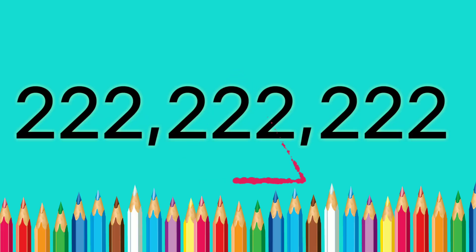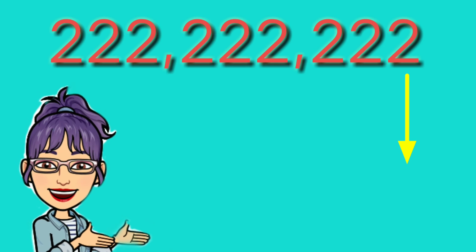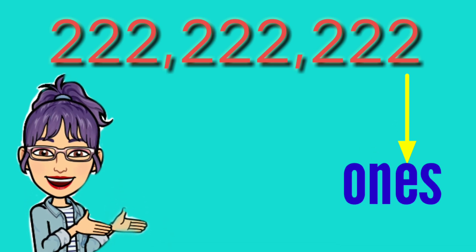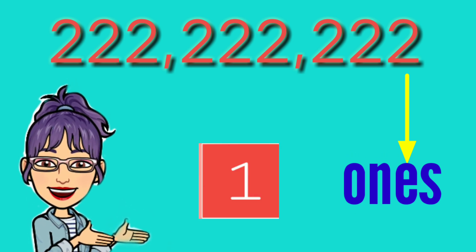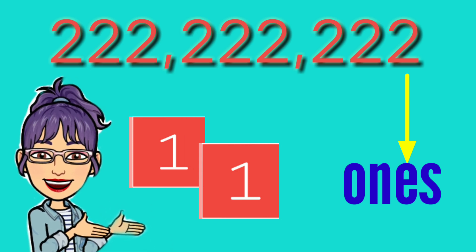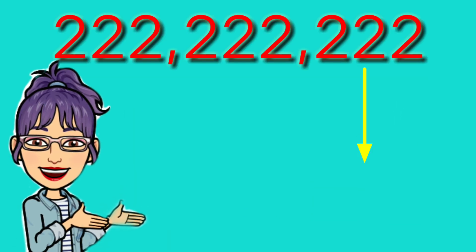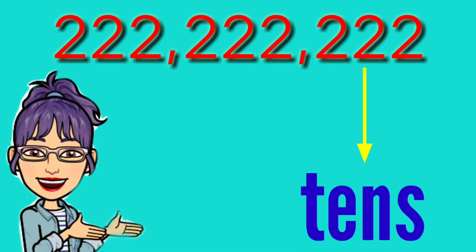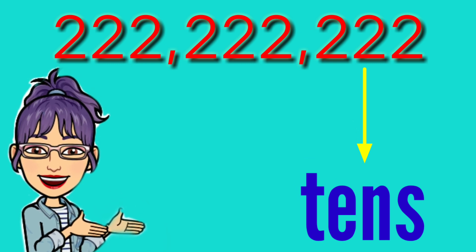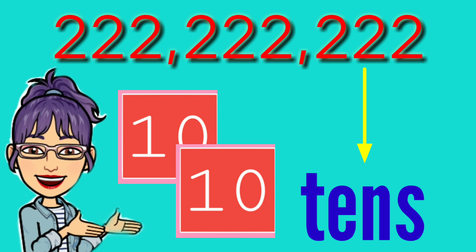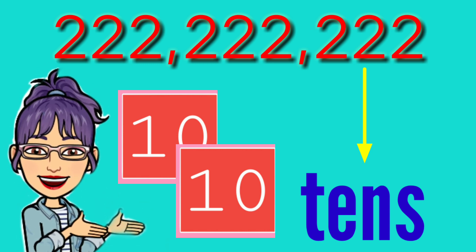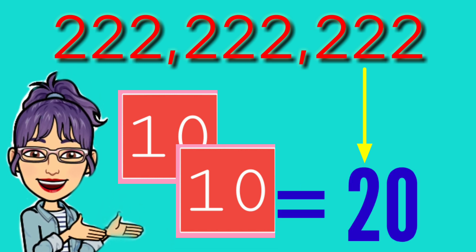Let's have 222,222,222. As you can see, all the digits are the same. Do they have the same value? Let us check. Starting from the rightmost 2: the place value is ones, so we have two groups of one, and 1 plus 1 equals 2. The value of the rightmost 2 is 2. Moving to the next 2 to its left: the place value is tens, so 10 plus 10 equals 20. The value of that 2 is 20.